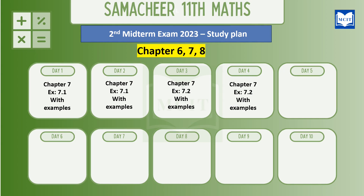Day 5: exercises 7.3, 7.4, and 7.5 with examples. So students, you will study 5 days in chapter 7. You will cover exercises 7.1 through 7.5. This is your 7th chapter study plan — you will study 5 days in chapter 7.